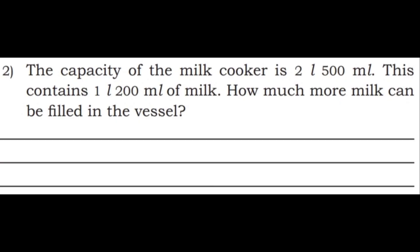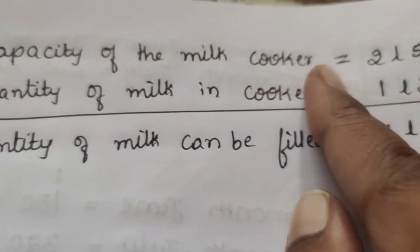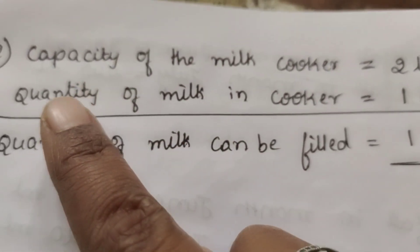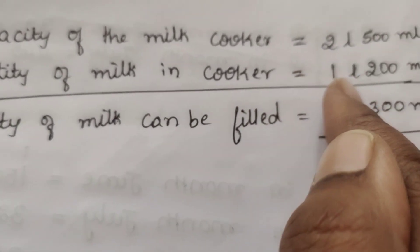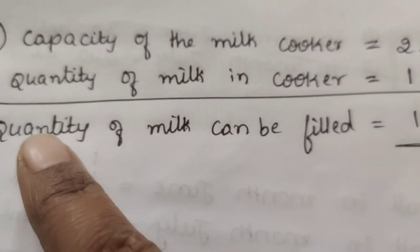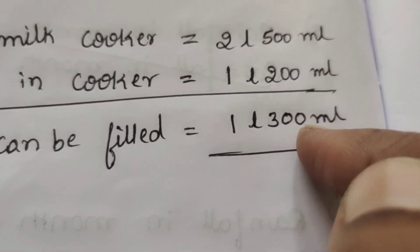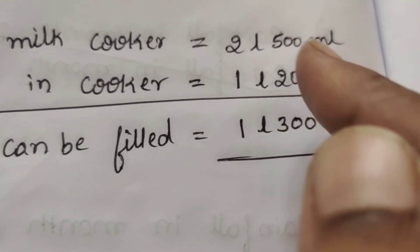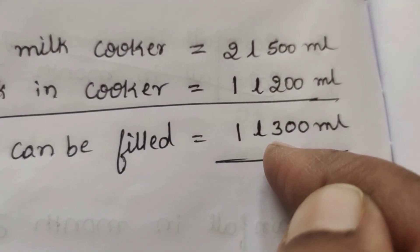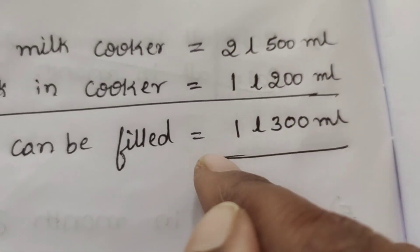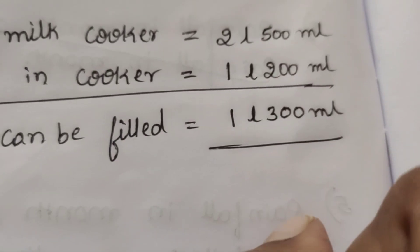Second question: The capacity of a milk cooker is 2 liter 500 ml. It contains 1 liter 200 ml of milk. How much more milk can be filled in the vessel? Capacity of milk cooker is equal to 2 liter 500 ml. Quantity of milk in cooker is equal to 1 liter 200 ml. 0 minus 0 is 0, 5 minus 2 is 3, 2 minus 1 is 1. Answer: 1 liter 300 ml of milk can be filled.